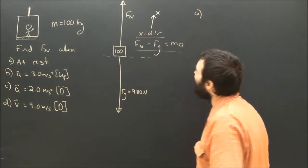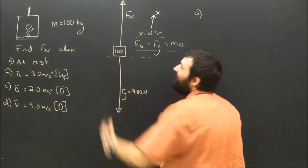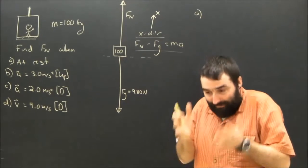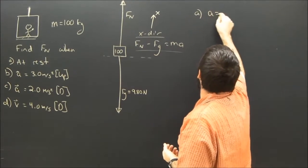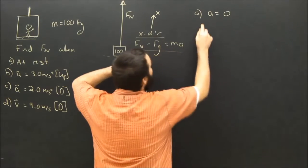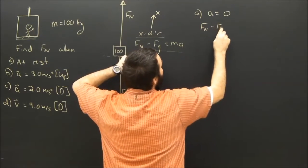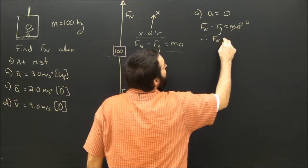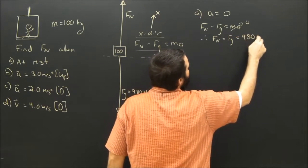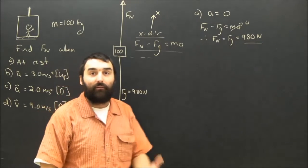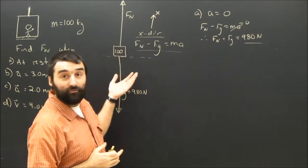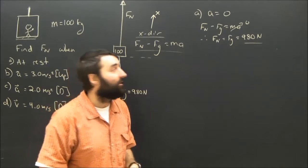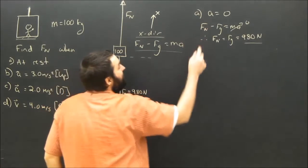So for part A, what is the given? The question said it's at rest, but what does that mean? Well, it of course means it's not moving, but that's not really useful. There's not a V in our equation. If something is sitting there at rest, you guys hopefully know that the acceleration must be equal to zero. So now I'm going to take my Newton's second law, Fn minus Fg equals Ma, and I'm going to sub in a zero for A. And that means that Fn must equal Fg, so no surprise there. The normal force is going to be equal to gravity. The person feels normal. They have a weight of 980 newtons, and if they're standing on a scale, it would say 100 kilograms.